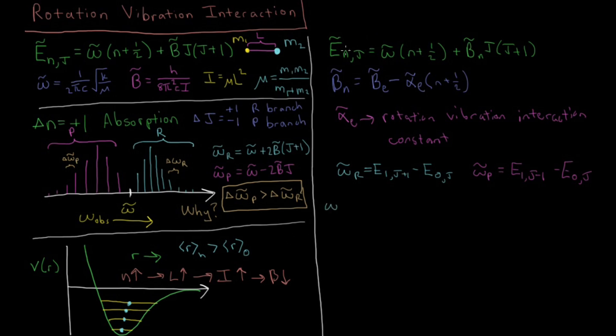Okay so what do the values of these end up coming out to be? Well if you substitute in this expression here down there what you'll eventually arrive at is that for ωᵣ you'll get something like ω̅ plus 2B̅₁ plus 3B̅₁ minus B̅₀ times j, then plus B̅₁ minus B̅₀ j squared.